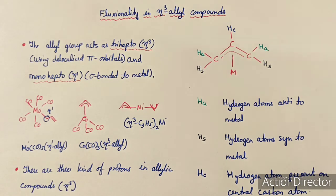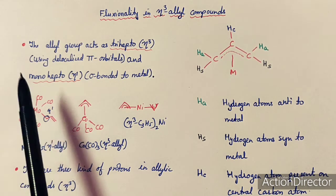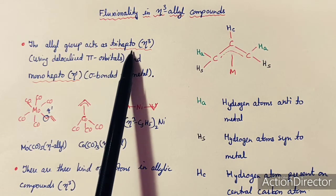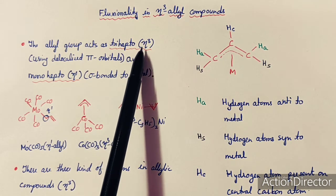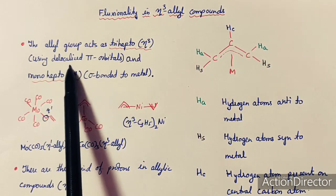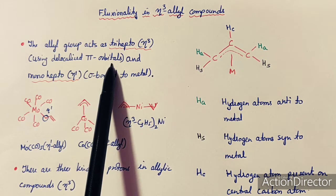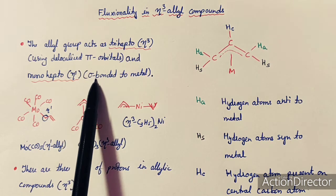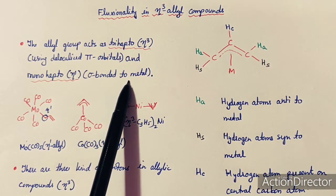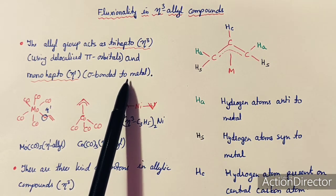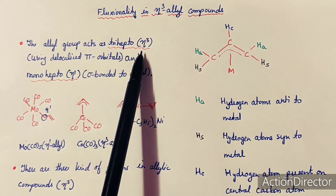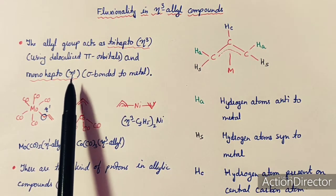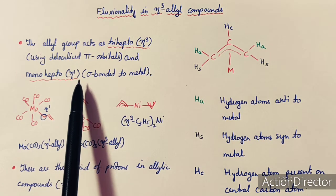As we already know, the allyl group can act as trihapto, that is Eta-3, using its delocalized pi orbitals, and monohapto, Eta-1, as sigma bonded to the metal. So this allyl group can act both as Eta-3 or Eta-1 in a metal complex.